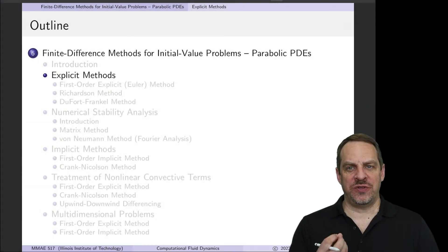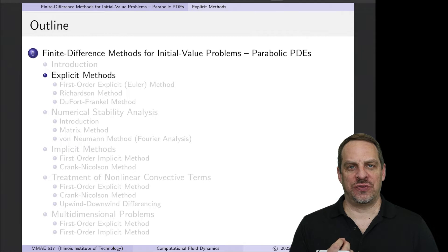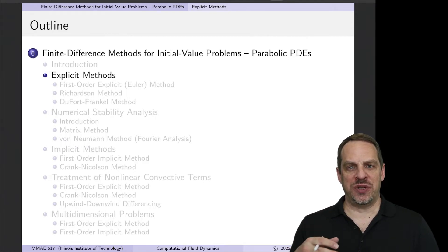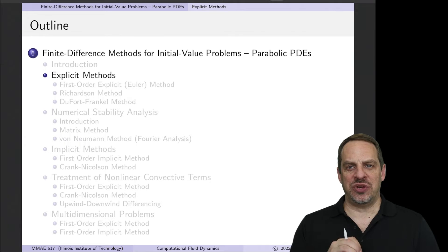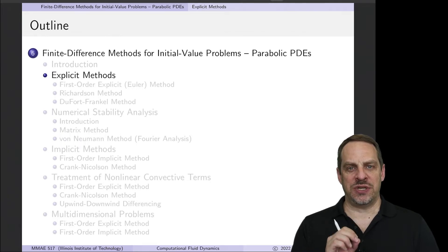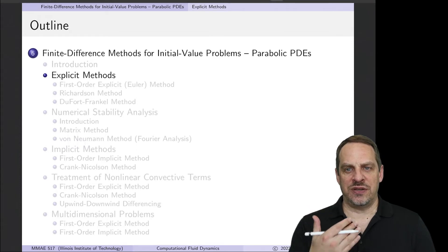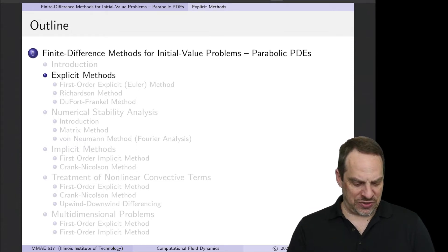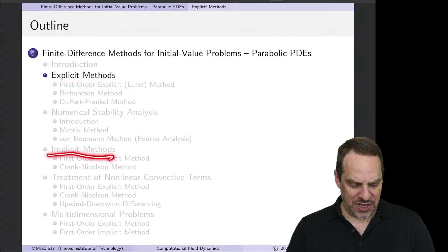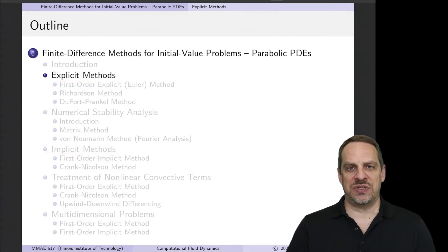We're talking about how we can use finite difference methods to solve parabolic partial differential equations. In the previous video, I reminded you of some of the properties of parabolic PDEs, and we introduced the model problem: the 1D unsteady diffusion equation. I also introduced the idea of marching methods in the form of explicit and implicit techniques.